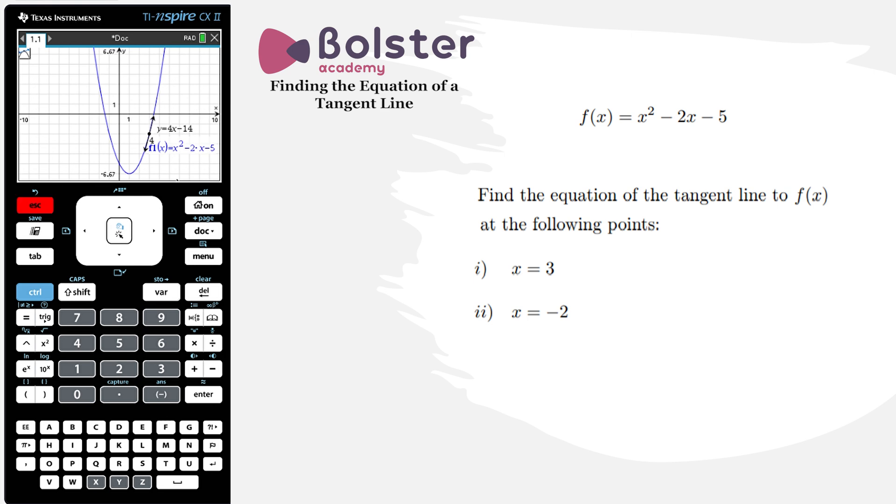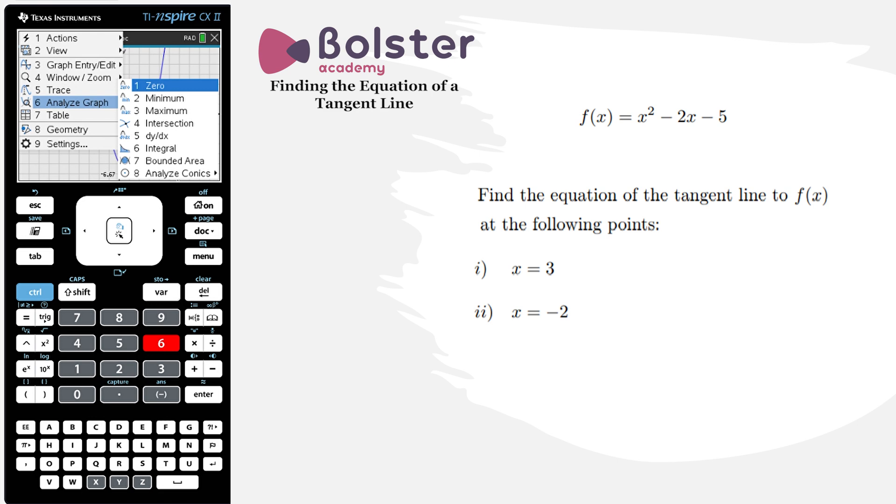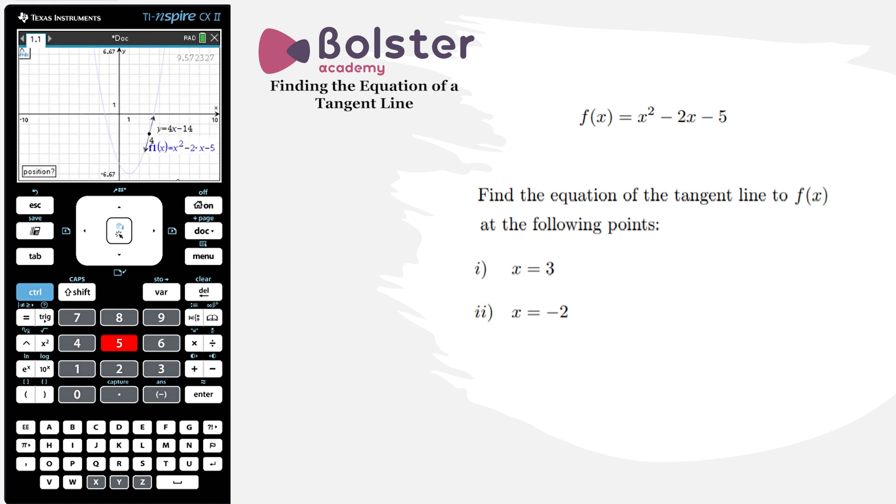Okay so what I want to do is I want to have that point already on the graph to make it easier for me to select the correct tangent line. So we're going to escape out of this and we're going to put the point on the graph first. So analyze graph, dy dx, what position do we want? We want it at minus 2.